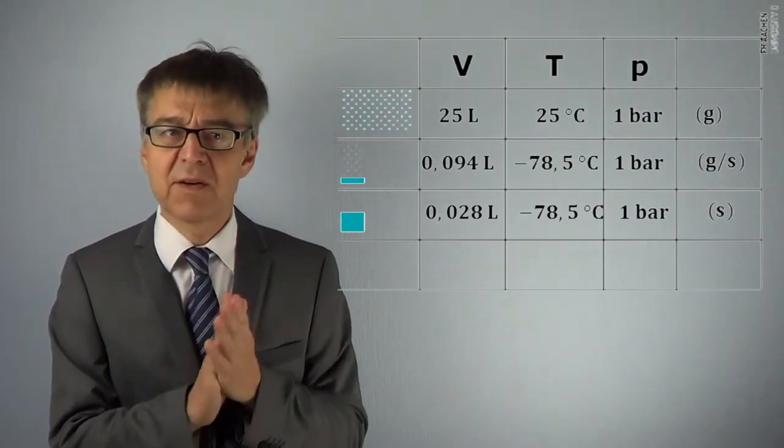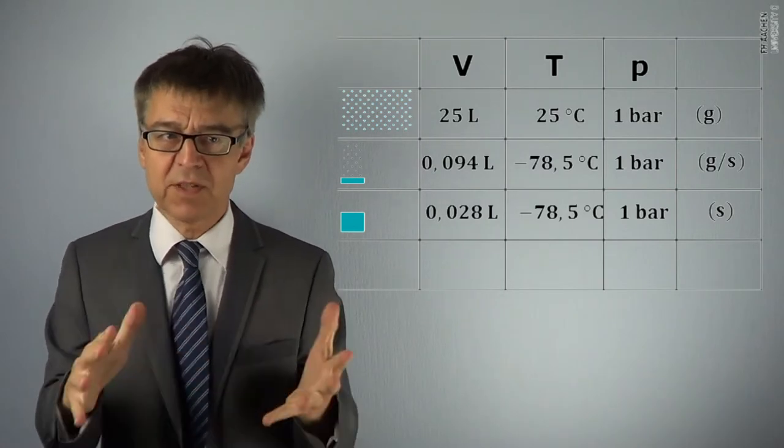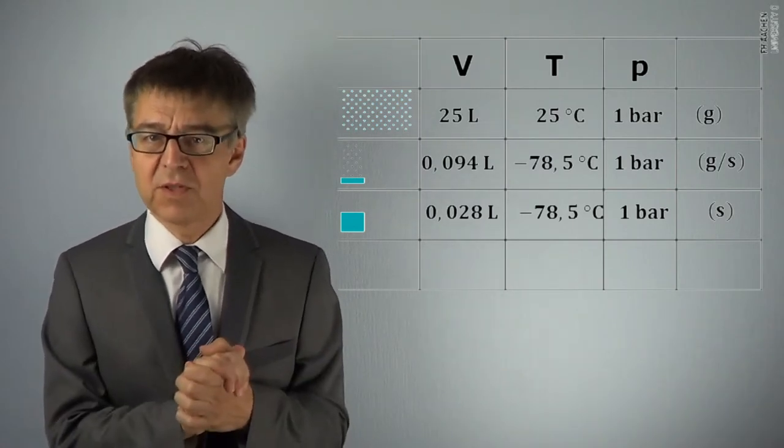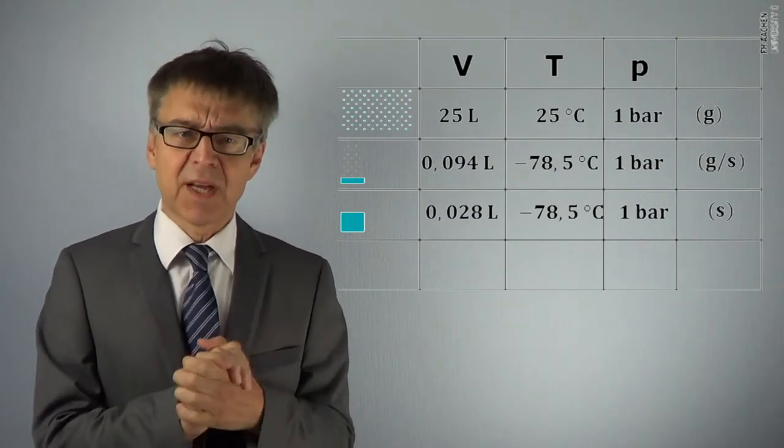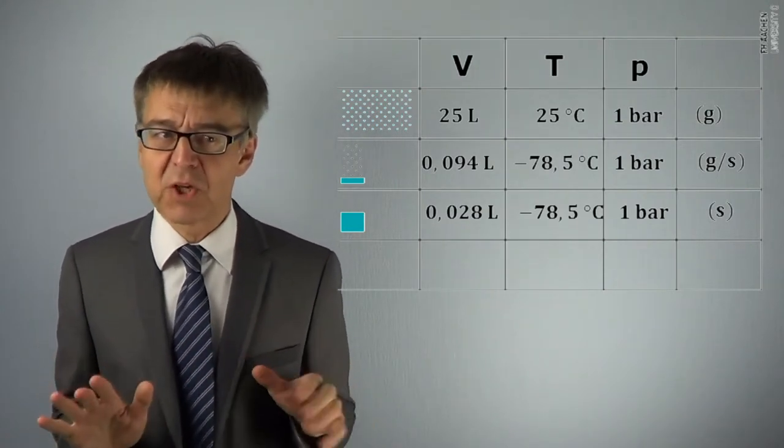In state 3, our system now consists just of a block of solid carbon dioxide, also known as dry ice. Liquid carbon dioxide does not exist at a pressure of one bar.